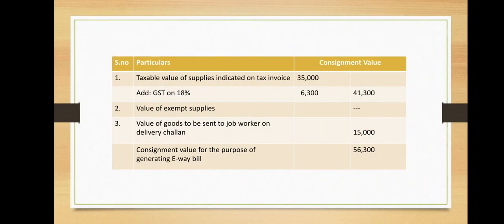According to the problem, the consignment value is calculated as follows: taxable value of supplies indicated on the tax invoice is rupees 35,000; GST at 18% on rupees 35,000 is rupees 6,300; total taxable supply with GST is rupees 41,300. Value of exempted supply is excluded as it is not chargeable to GST. Value of goods to be sent to the job worker on delivery challan is rupees 15,000, which is included. Therefore, the total consignment value comes to rupees 56,300.